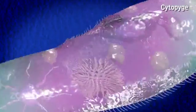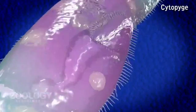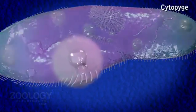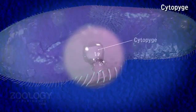Cytopyge. Near posterior end of body, a little behind cytosome, a little to the right side, a small portion of ectoplasm and pellicle is somewhat weak. Here at the time of ejection, a minute aperture called cell anus or cytopyge is visible through which the ejection is taking place.